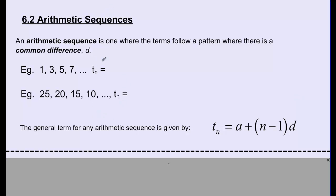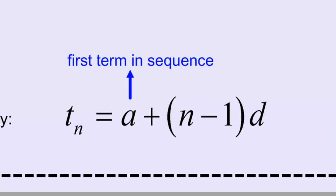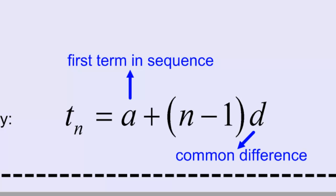We're going to figure out what the general terms are for these. The general term TN for any arithmetic sequence can be given by the formula TN equals A plus N minus 1 times D, where A is the first term in the sequence, D represents the common difference, and N stands for whatever term number we're looking for at that given moment.